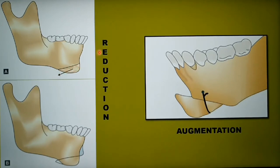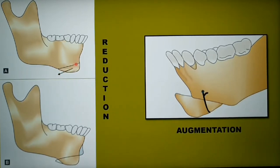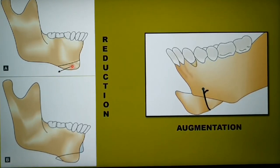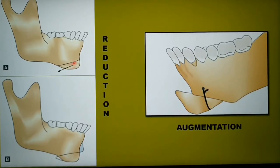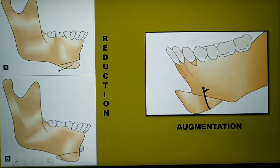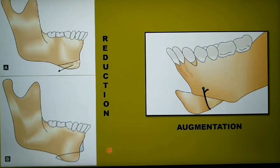An important factor to consider is good adaptation of the soft tissue following chin repositioning. In the reduction of the chin, soft tissue adaptation following posterior repositioning is not 100%. For this reason, a concavity may be carved into the anterior mandible — you contour the anterior portion of the mandible so that the soft tissue of the chin can maintain the natural contour.